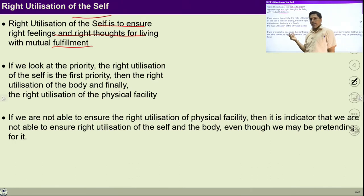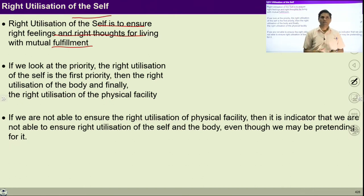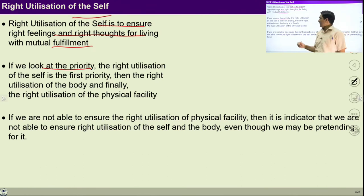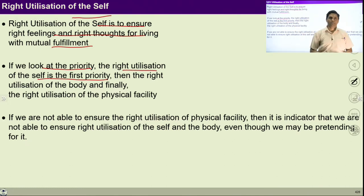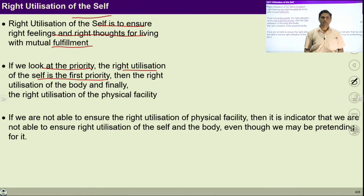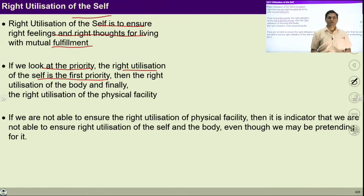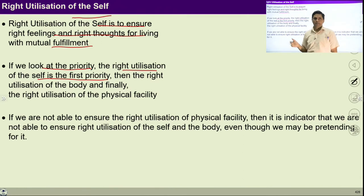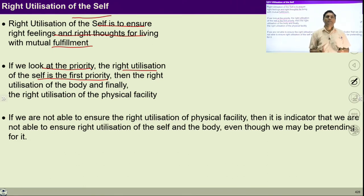You can take a pause for two minutes and ask yourself whether you are rightly utilizing your consciousness — this self — or not. If we look at the priority, right utilization of this self is the first priority. Because if I am in harmony, then I can take care of my body with the feeling of self-regulation, then I can participate at the level of family and at the level of society with right feelings — feeling of trust, feeling of respect, feeling of affection, feeling of love. For such harmonious participation, the self should be in harmony.